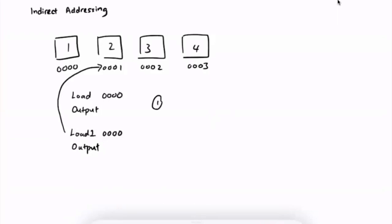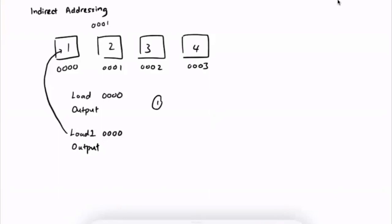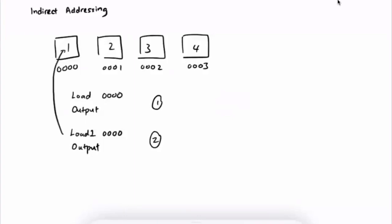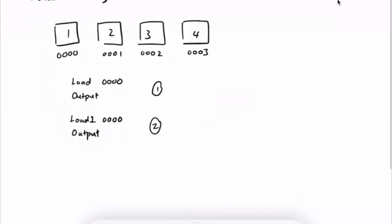This might sound a bit confusing at first. What it does is: if you add the I, it will look inside the value of this address, treat it as an address, and load the value of that address. So actually we output 2, because it's loading the value of that address, which is 2. This is the basic concept of indirect addressing. It might still sound a bit confusing, but we will go through more examples for better understanding.